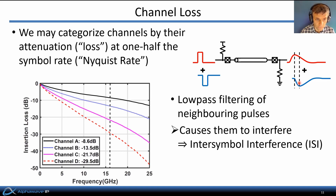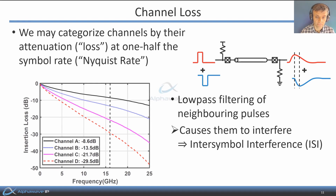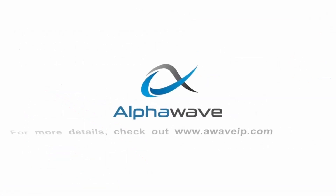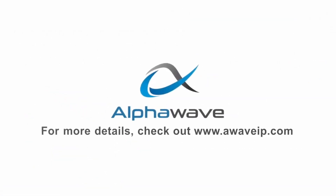This interference of neighboring pulses is called inter-symbol interference, or ISI.